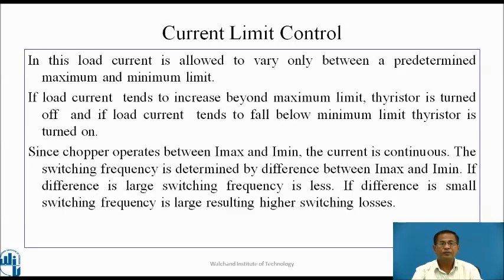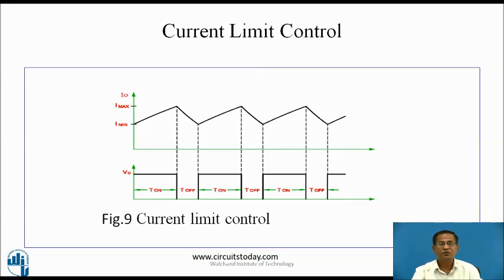In Current Limit Control, the output current is allowed to vary only between predetermined maximum and minimum limits. If load current tends to increase beyond the maximum limit, the thyristor is turned off. If load current tends to fall below the minimum limit, the thyristor is turned on. Since the chopper operates between Imax and Imin with continuous current, the switching frequency is determined by the difference between Imax and Imin. If the difference is large, switching frequency is less; if the difference is small, switching frequency is large, resulting in higher switching losses. These are the waveforms for current limit control.